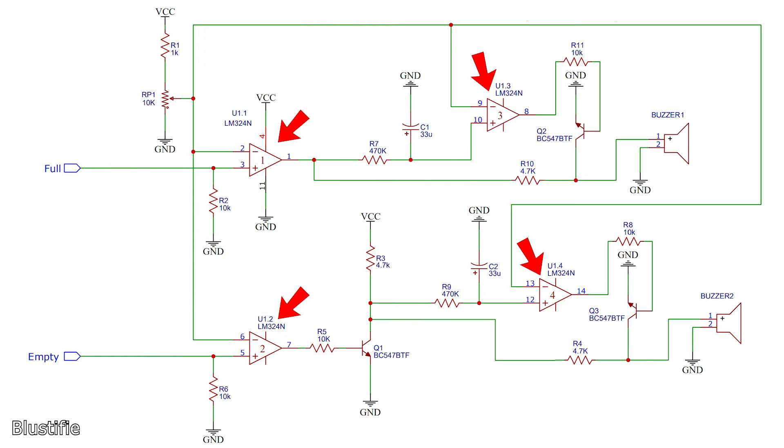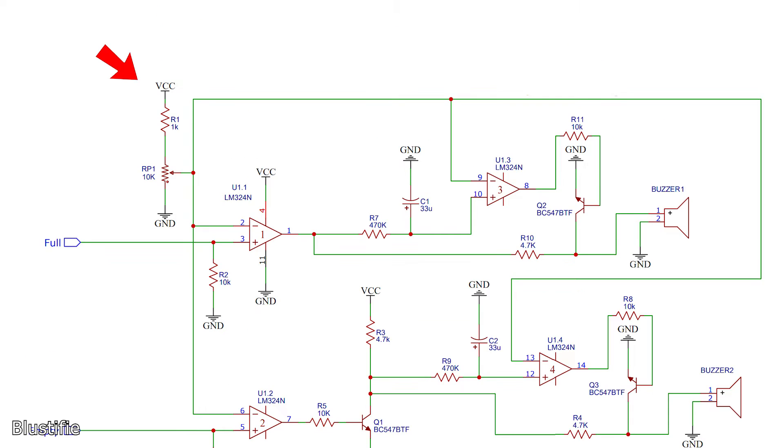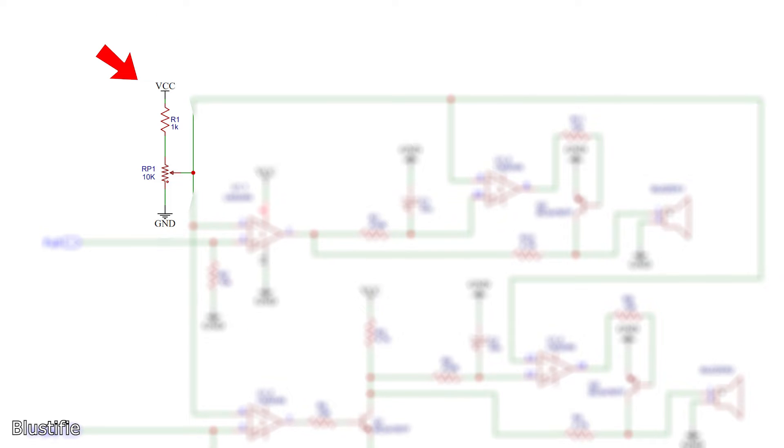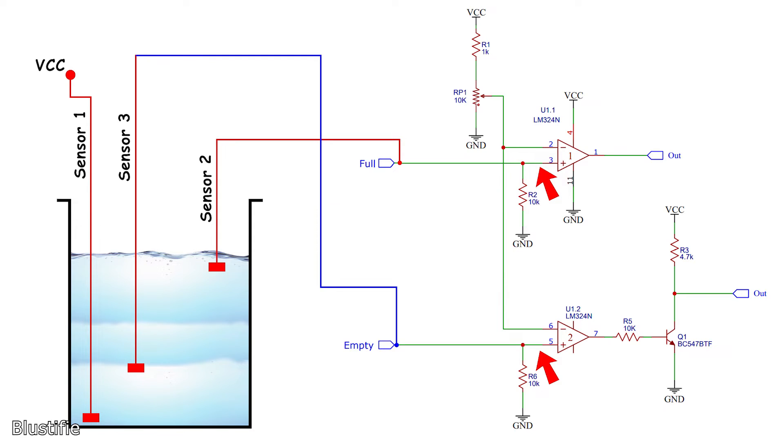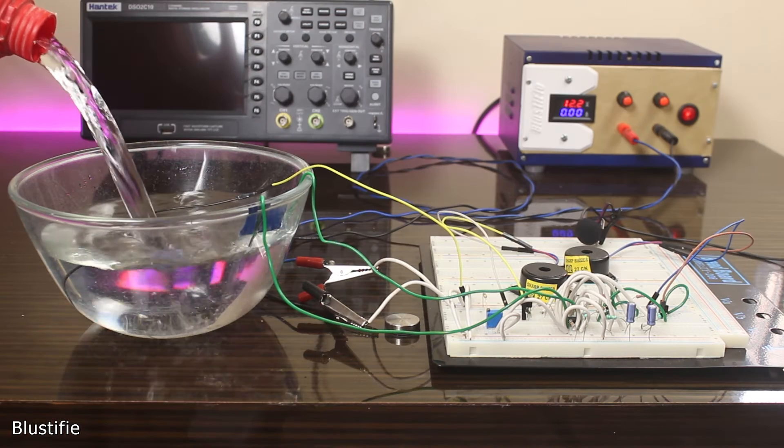All the inverting inputs of all 4 op-amps of LM324 are connected with the voltage divider that's tuned to perfectly provide 4.2V. Non-inverting inputs of these op-amps will be connected with the supply voltage through the water. Depending upon the water level, voltage will either be present or absent on the non-inverting inputs. Following that, the output of the op-amps is completely dependent on the water level. This way I can easily detect water level high.